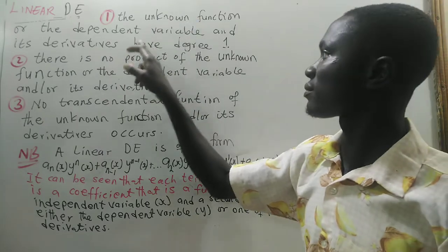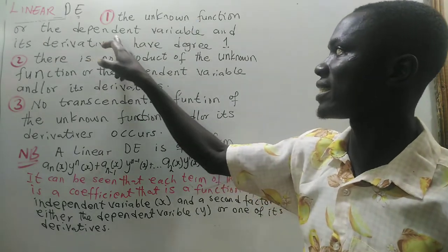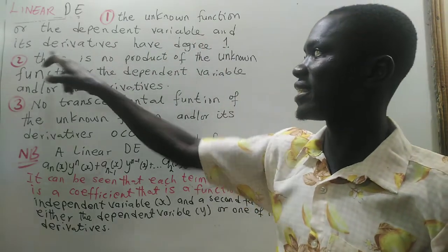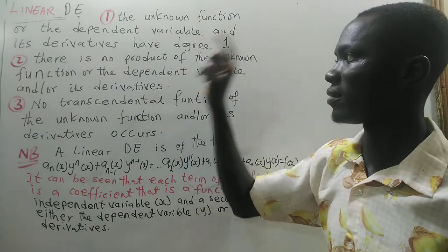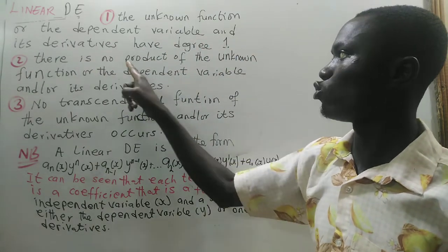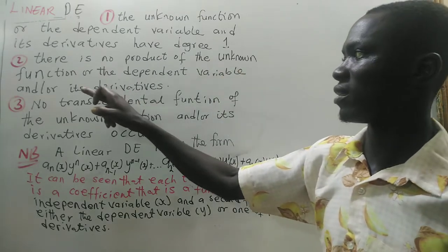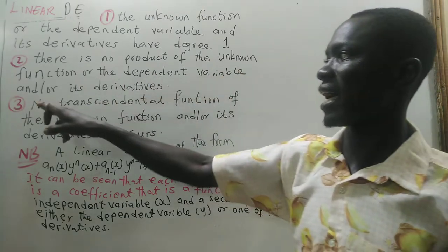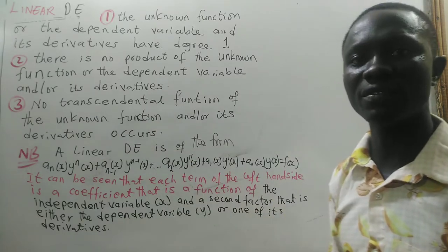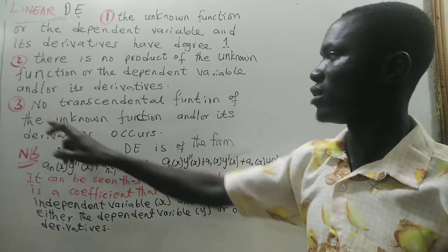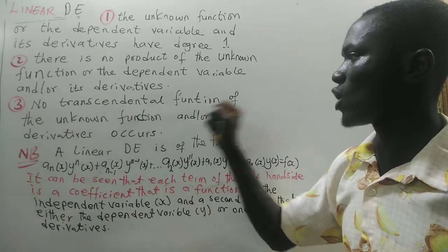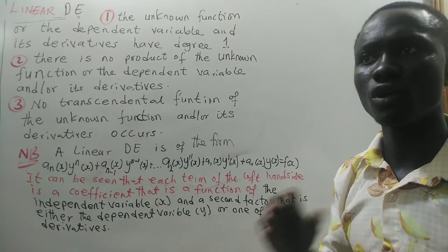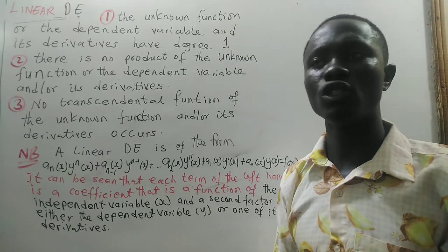Condition 1: The unknown function or the dependent variable and its derivatives have degree 1. Condition 2: There is no product of the unknown function or the dependent variable and/or its derivatives. Condition 3: No transcendental function of the unknown function or its derivatives may occur in the differential equation.